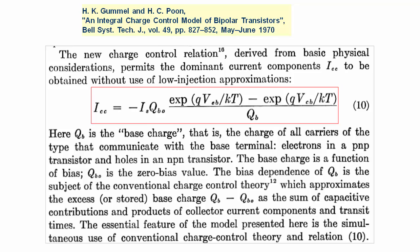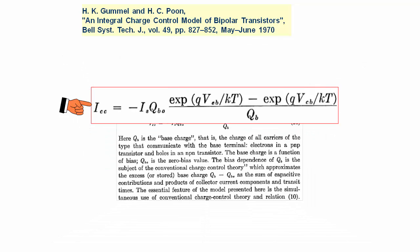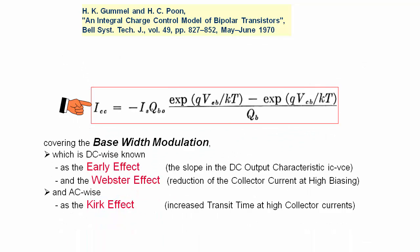The fundamental equation of the Gummel-Poon model, the integral charge control relation, links the collector emitter current to the total base carrier charge and to the voltages at the transistor pins. This means that the model covers the base width modulation effect, also known as the early effect, the Webster effect, what is the reduction of the collector current at high biasing, and the Kirk effect, the increased transit time at high collector currents.